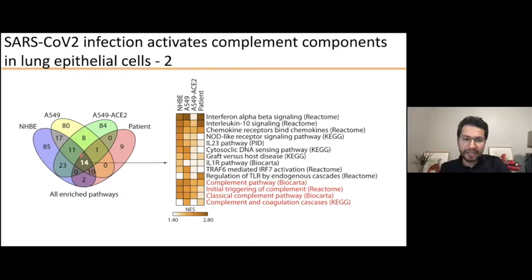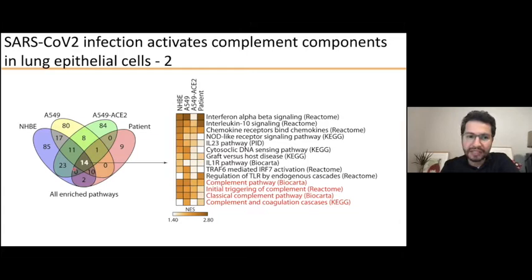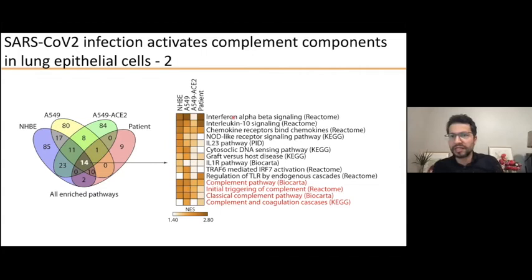To summarize: if we look at the lung of patients and different lung epithelial cells infected with SARS-CoV-2 and identify pathways shared across patients and cell lines, there are 14 pathways that are highly induced. Among them, of course, are interferon response pathways — those are induced in response to any infection — but we also observed complement-related pathways among the top induced pathways.